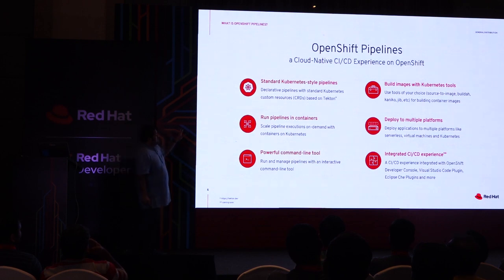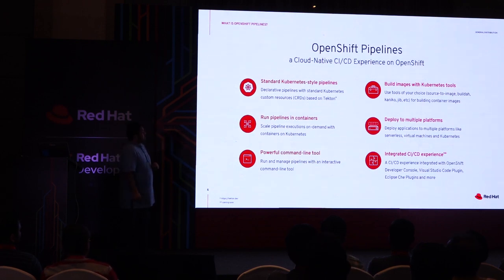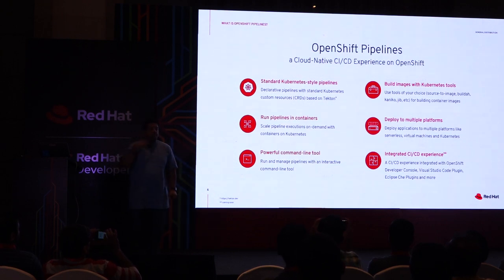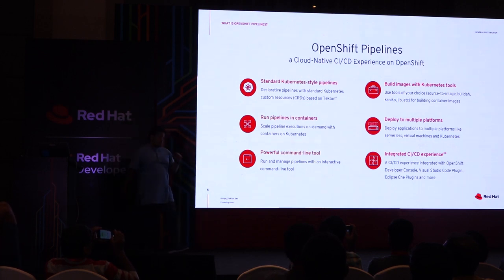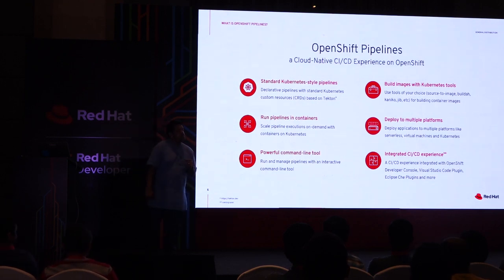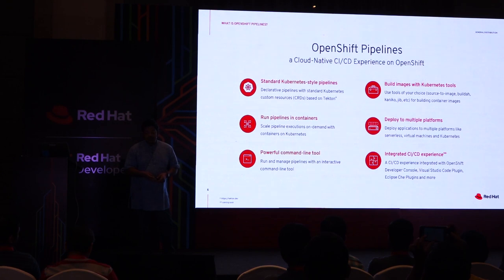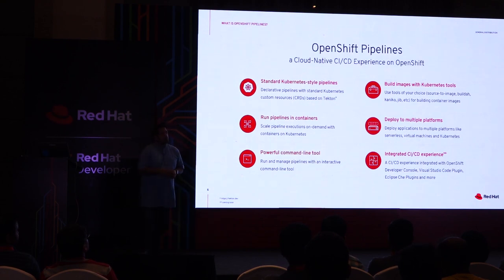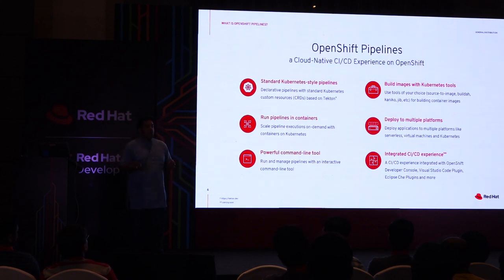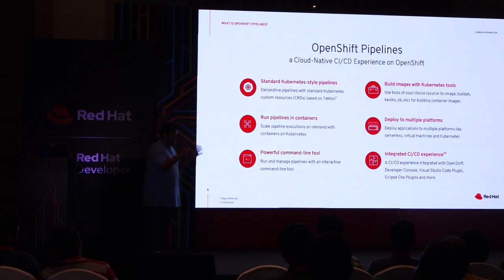OpenShift Pipelines has standard Kubernetes CRDs based on Tekton, runs pipelines in containers where each pipeline step has its own container. It has a powerful command-line tool called TKN or Tekton CLI, which helps you see logs, tasks, how the pipeline is running, whether it failed, and debug configuration problems. It can build images with Kubernetes tools like Buildah, Kaniko, Jib, and Podman — and this doesn't require Docker daemon anymore. It uses CRIO — the Container Runtime Interface — and follows container runtime image specifications. OpenShift 4 uses CRIO behind the scenes.